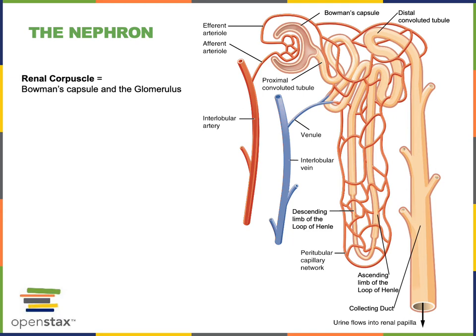The most proximal region of the nephron where filtration occurs is known as the renal corpuscle. The renal corpuscle includes the glomerular capillary bed where filtration is occurring, and during filtration, liquid is forced out of the glomerular capillary and into the nephron. The part of the nephron that surrounds the glomerulus and forms the other portion of the renal corpuscle is called Bowman's capsule. Liquid flows into Bowman's capsule from the blood, and that liquid is called filtrate.